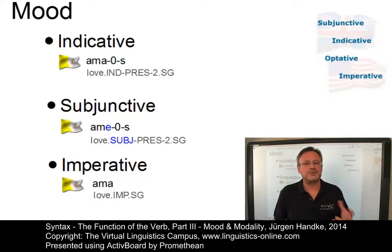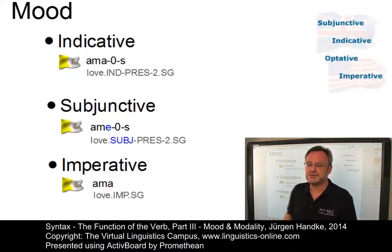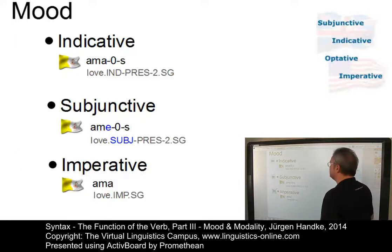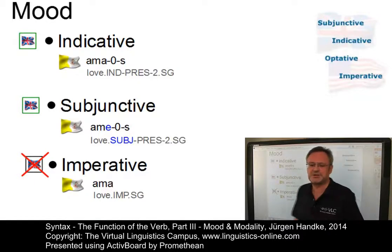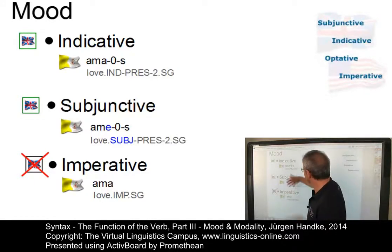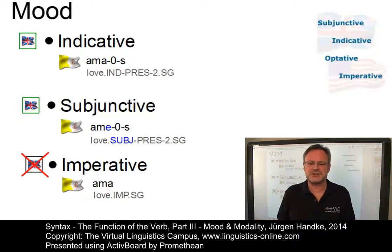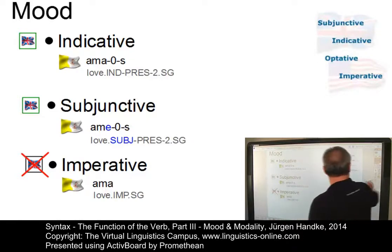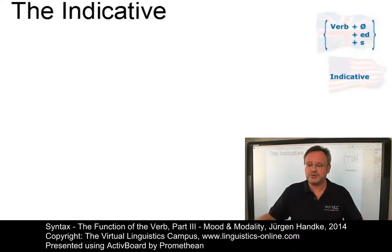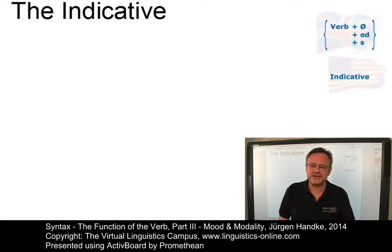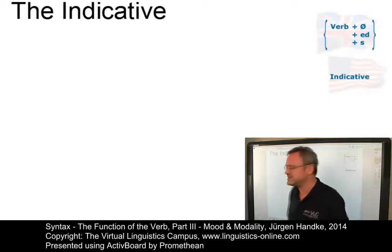However, the category mood is not found in all languages. In English, only a rudimentary system of mood is left: the indicative mood, normally expressed by the base form of the verb, and the subjunctive mood, which is expressed by a variant of this. Let's start with the discussion of the indicative mood in present-day English.